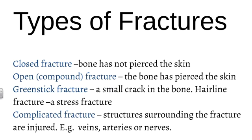A closed fracture is where the bone has been broken but has not pierced the skin. An open or compound fracture is where the bone has actually pierced the skin. A greenstick fracture is just a small crack in the bone, and a hairline fracture falls more in the stress fracture category. A complicated fracture is where the structures surrounding the fracture — such as veins, arteries, and nerves — also get injured.